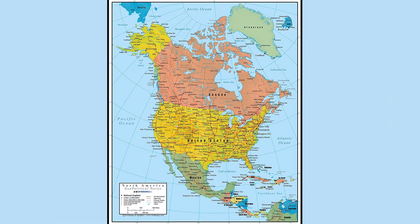North America is a continent of contrast. Among the 23 independent countries and over a dozen dependent territories, you will find small islands to huge land masses from north to south. The geography ranges from ice-covered tundra to high mountain peaks to beautiful sunny beaches to driest deserts.